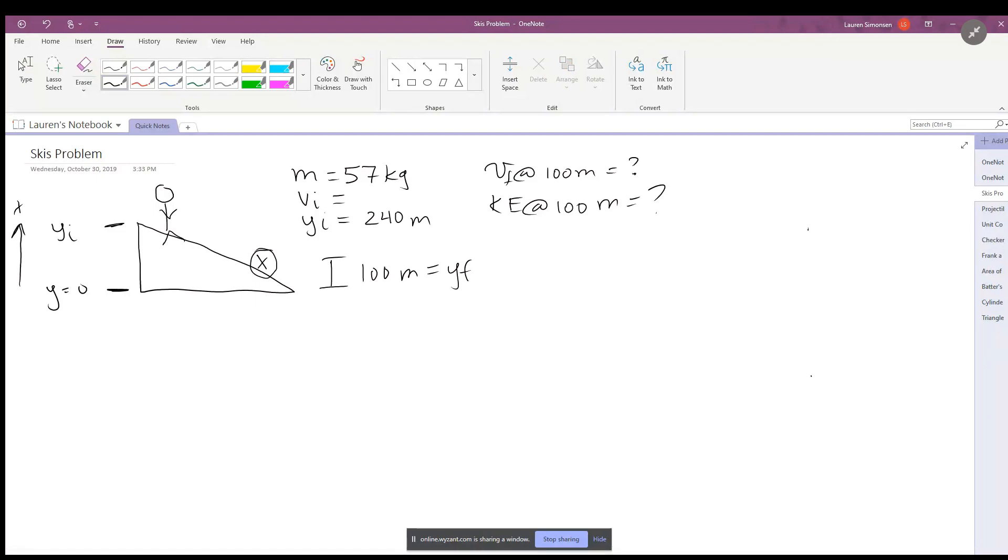The important aspect of this problem is that it's a frictionless slope, and so we have conservation of energy here. You might want to use kinematics, but don't be fooled—energy conservation is going to be a much easier process. Because it is frictionless, we do not need to use the work-kinetic energy theorem and we can just say initial is equal to the final.